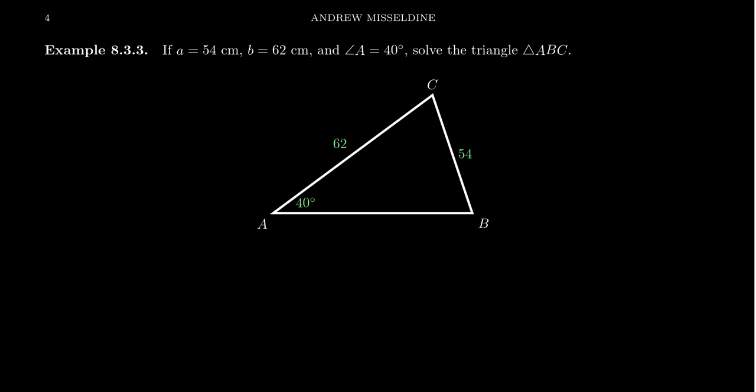The criteria we're given is the side-side-angle scenario, which is commonly referred to as the ambiguous case. We have to be cautious here because if we're not careful we might get the wrong solution. There could be no solutions, one solution, or two solutions to the ambiguous case. We will investigate them using the law of sines.